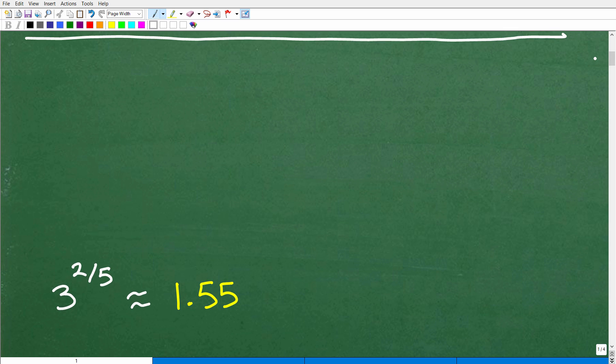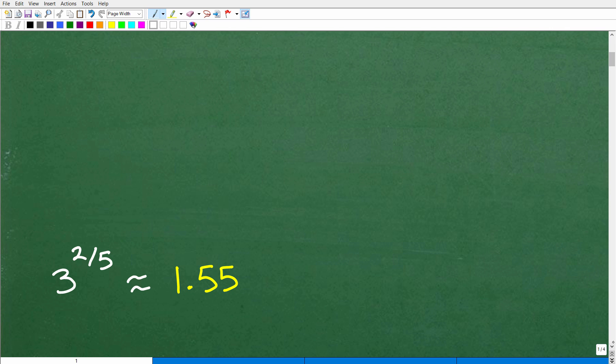3 to the 2 fifths power is approximately 1.55. This is rounded off, so it's not exactly this, but it's 1.55. If you got basically 1.55 and some decimals, you did this problem correctly.